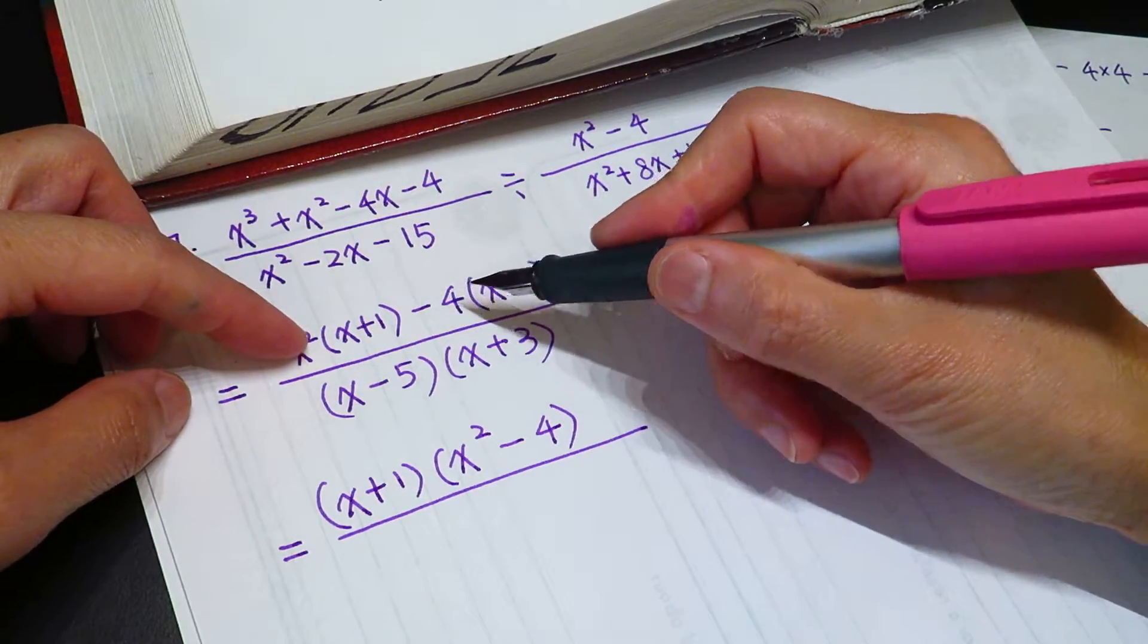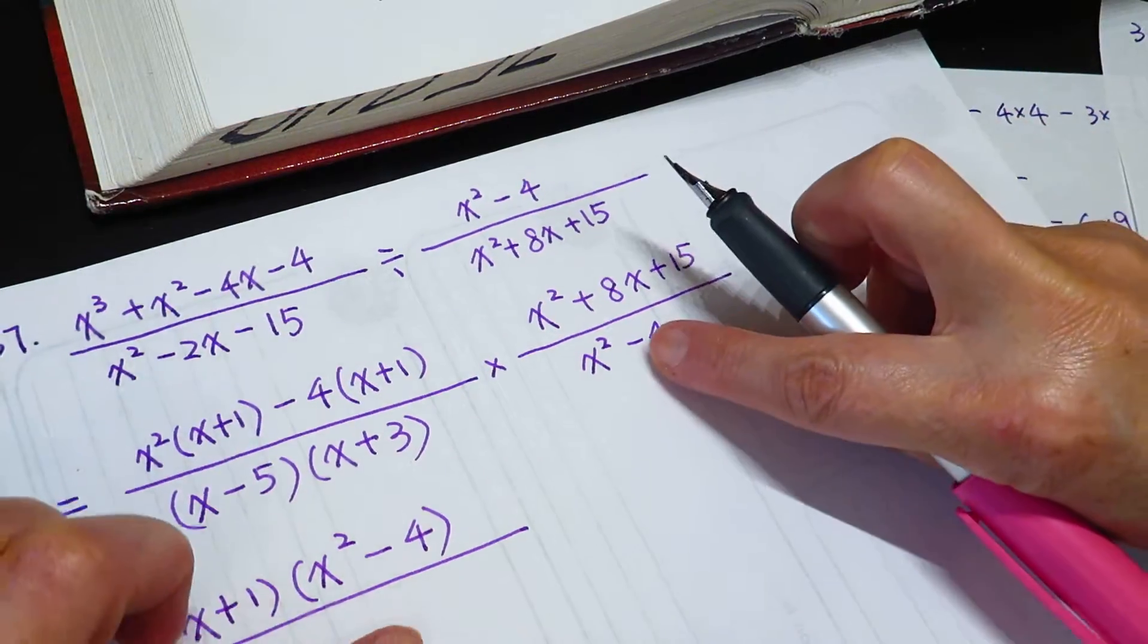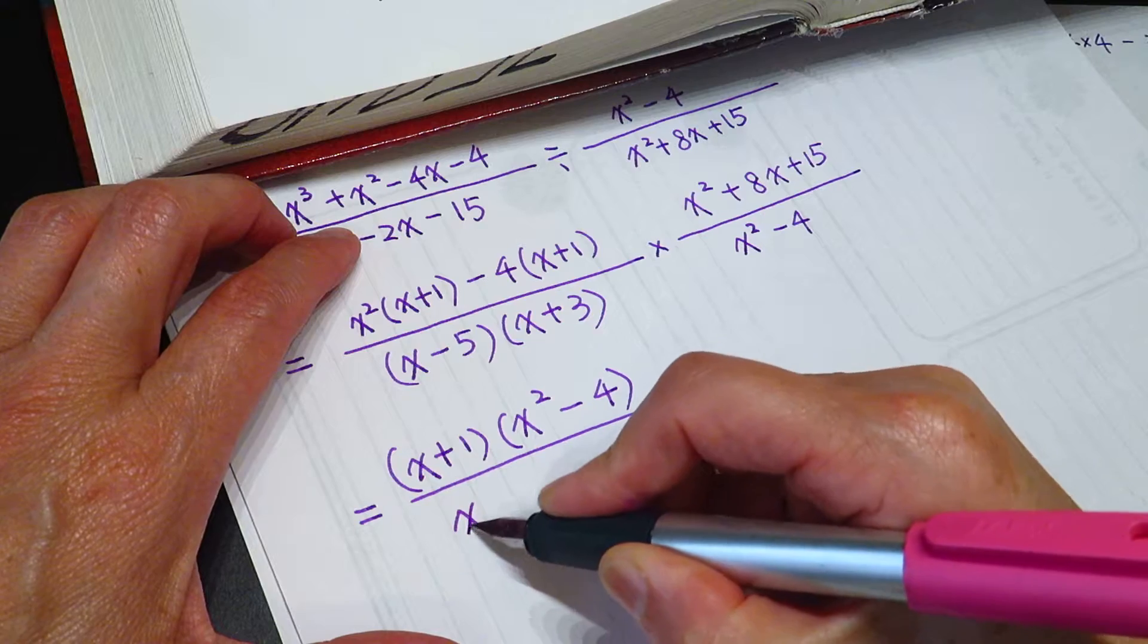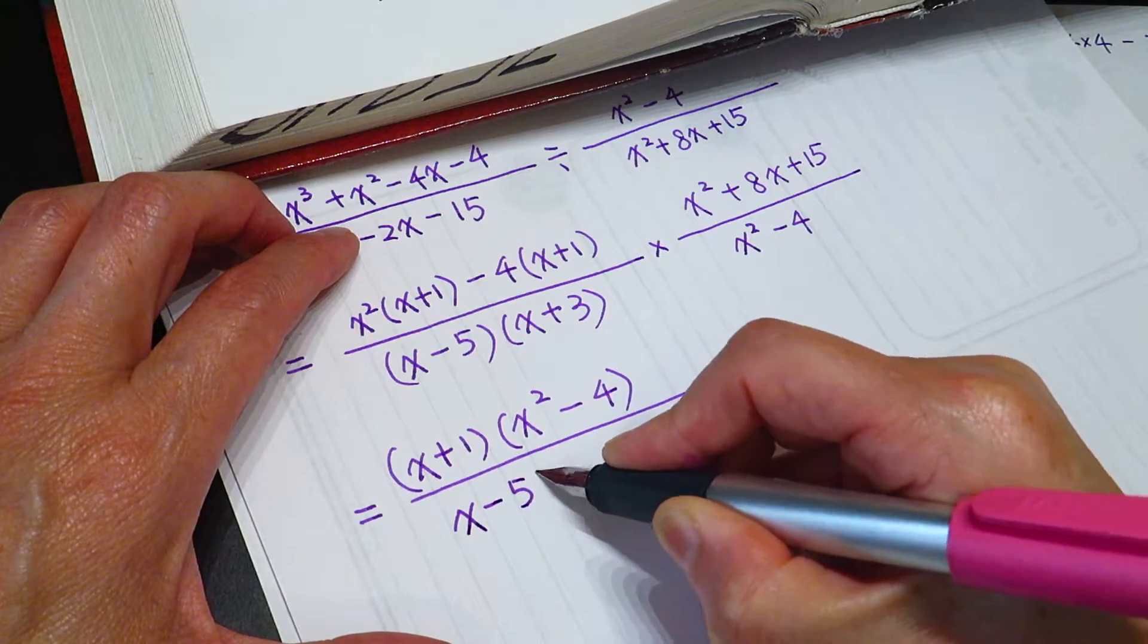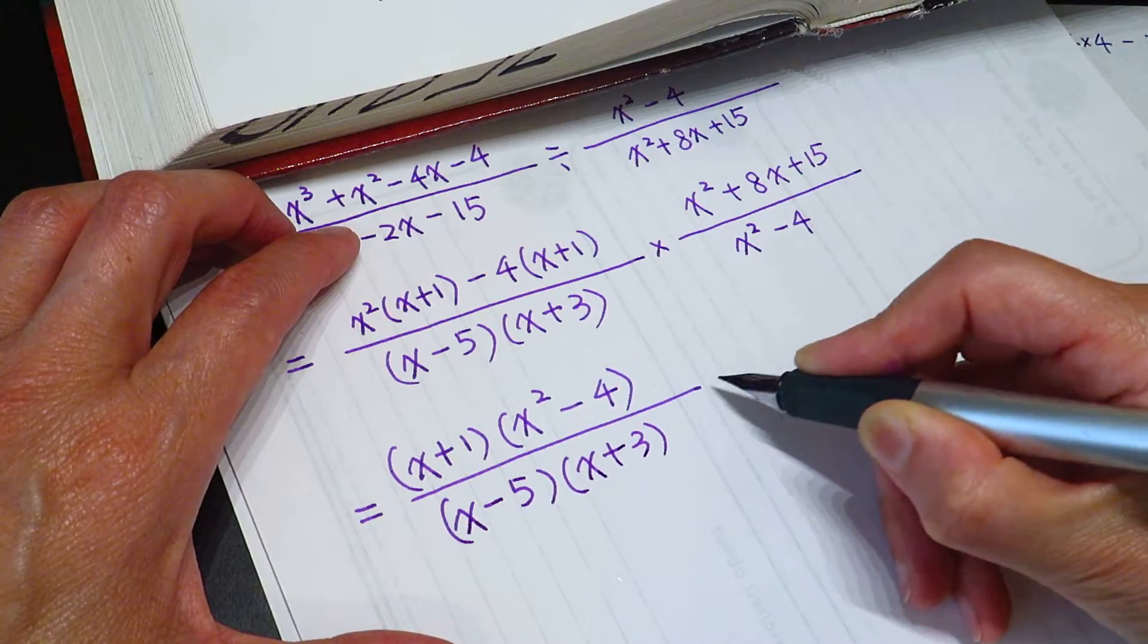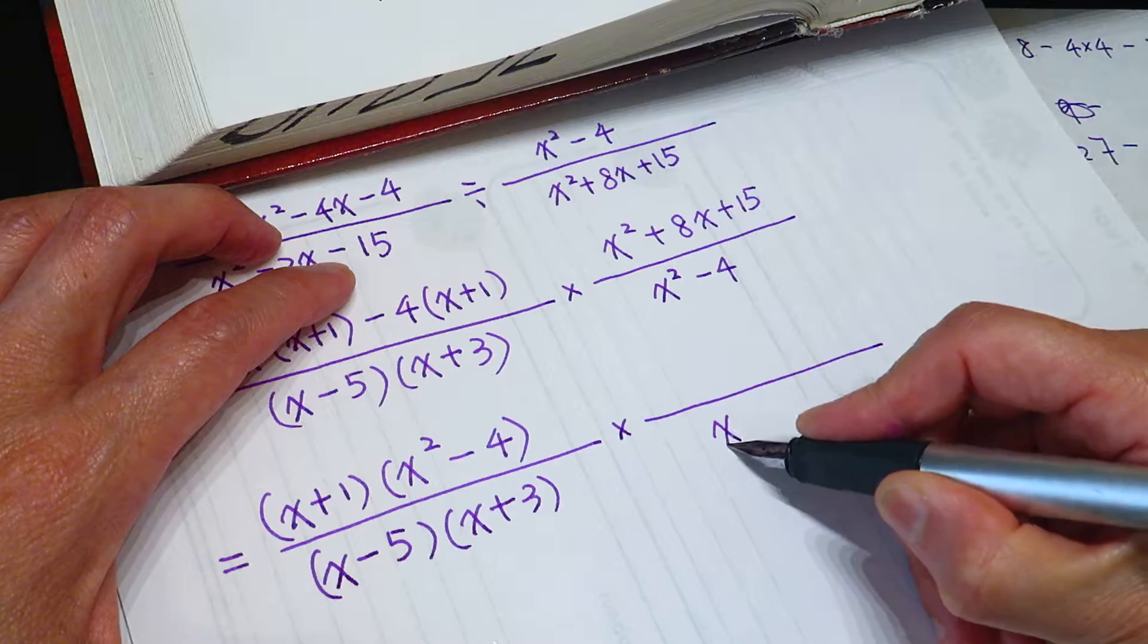need to factor it. Do not even need to factor it. Now I already see the similar terms. Times x minus 5. I am copying and did not do anything. This one we do not need to factor it, x